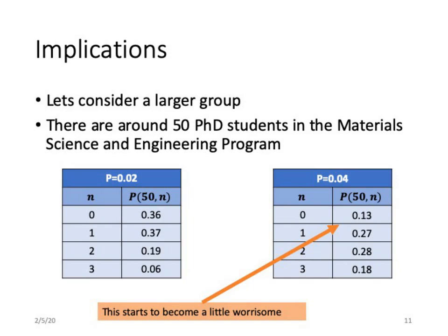Let's think about a larger number. I'm a member of a materials science engineering graduate program with about 50 students. At a 2% fatality probability, the probability of zero deaths is about 36% and the probability of exactly one death is around 37% — so there's actually a higher probability of seeing one death than none. Moving to a 4% fatality rate, the probability of zero deaths is about half that of seeing either one or two deaths, which is worrisome.